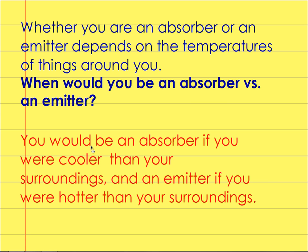If you're in a cold room, say if you go grab a piece of ice, you're emitting heat because you're melting the ice. So you're an emitter when you're warmer than your surroundings and an absorber when you're cooler than your surroundings.